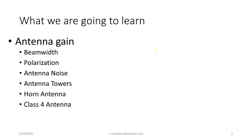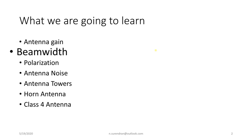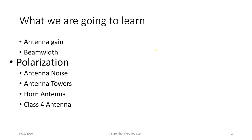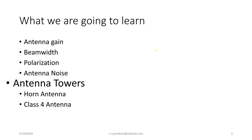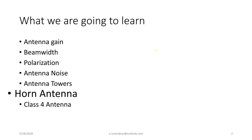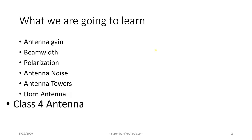The topics we will cover are: antenna gain — what it is, the formulas used to calculate gain and front-to-back ratio; beam width — its characteristics and pros and cons; polarization — types of polarization and cross-polarization; antenna noise — parameters affecting it and the relationship between noise figure and noise temperature; antenna towers — types and how to calculate tower heights; horn antennas — how they work and their advantages; and finally, class 4 antennas — their advantages, introduced by ATSI group, which are more advanced than class 3 antennas.